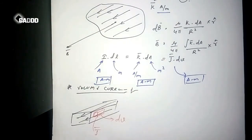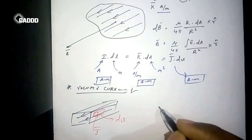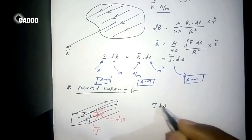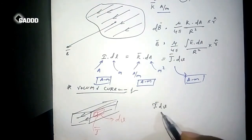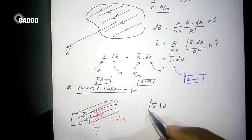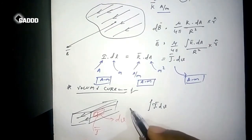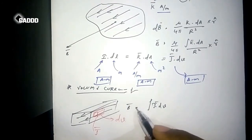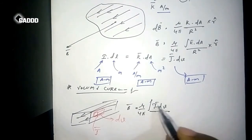In first case we have written I·dL, in second case we have written K·dA, and in this case we will write J·dV. Not taking it lengthy, dB is mu by 4 pi, this is the volume current, r square into r cap.